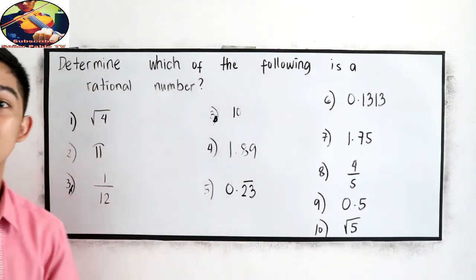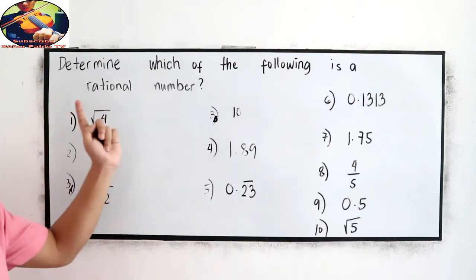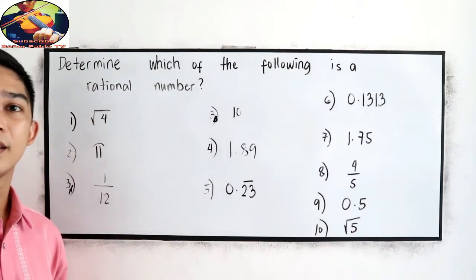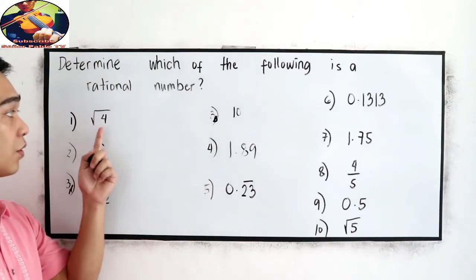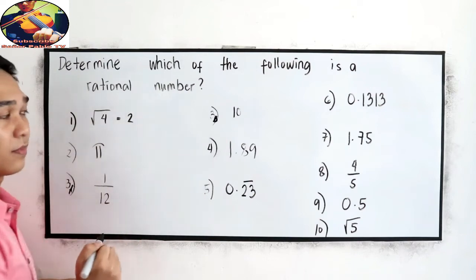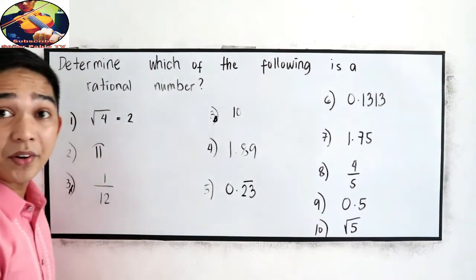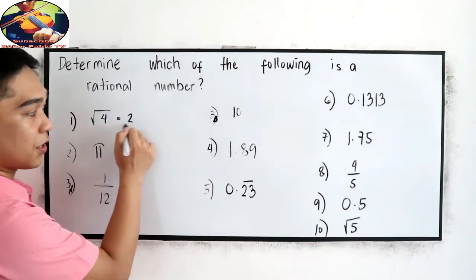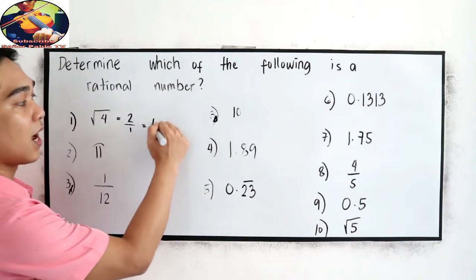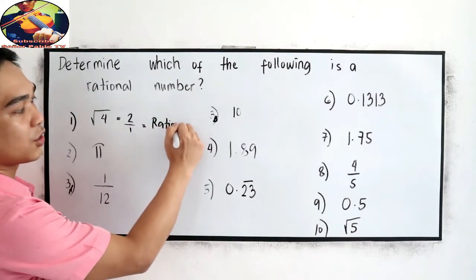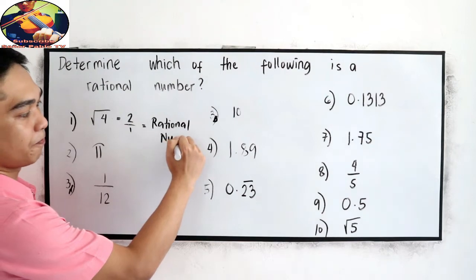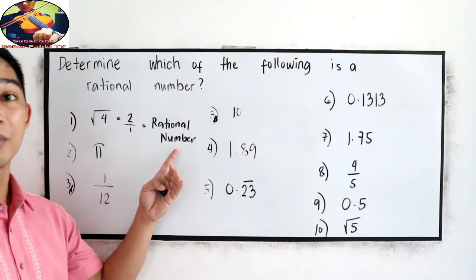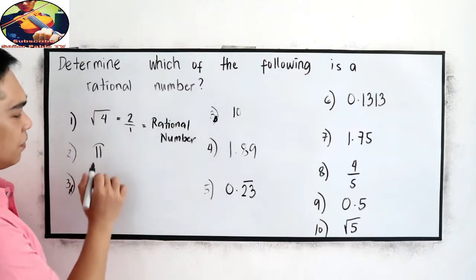Determine which of the following is a rational number. Number 1: square root of 4. We know that square root of 4 is equal to 2, and 2 can be written in rational form as 2 over 1. So this is a rational number.